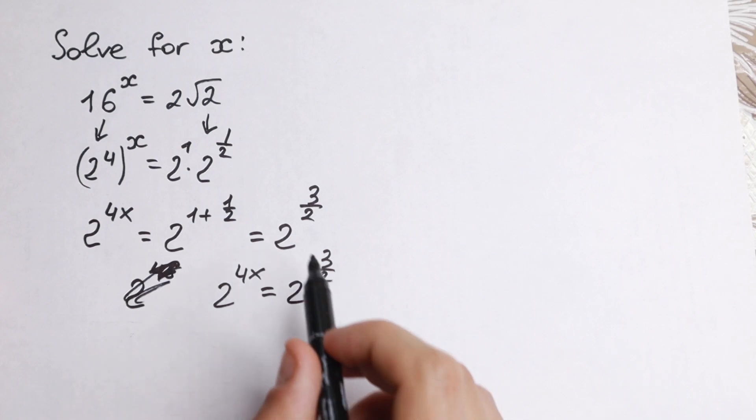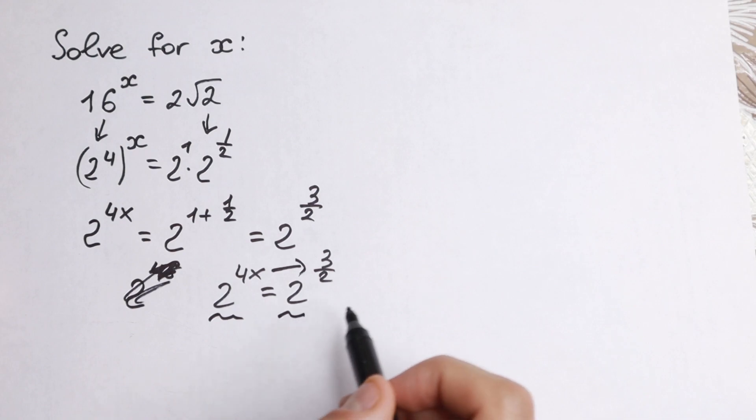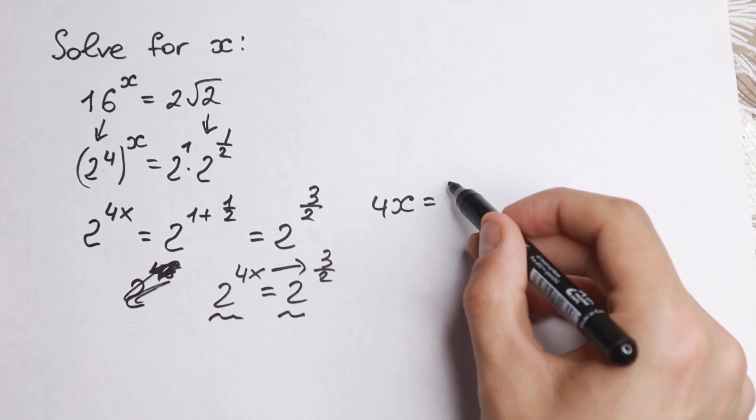And we can easily solve it, because 4x need to be equal to 3 half, because base are the same.